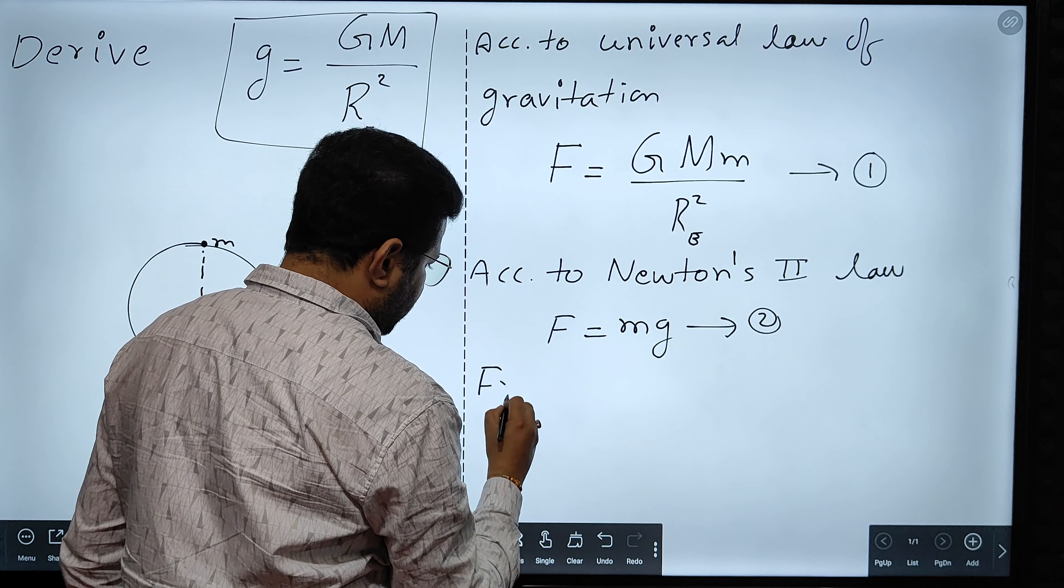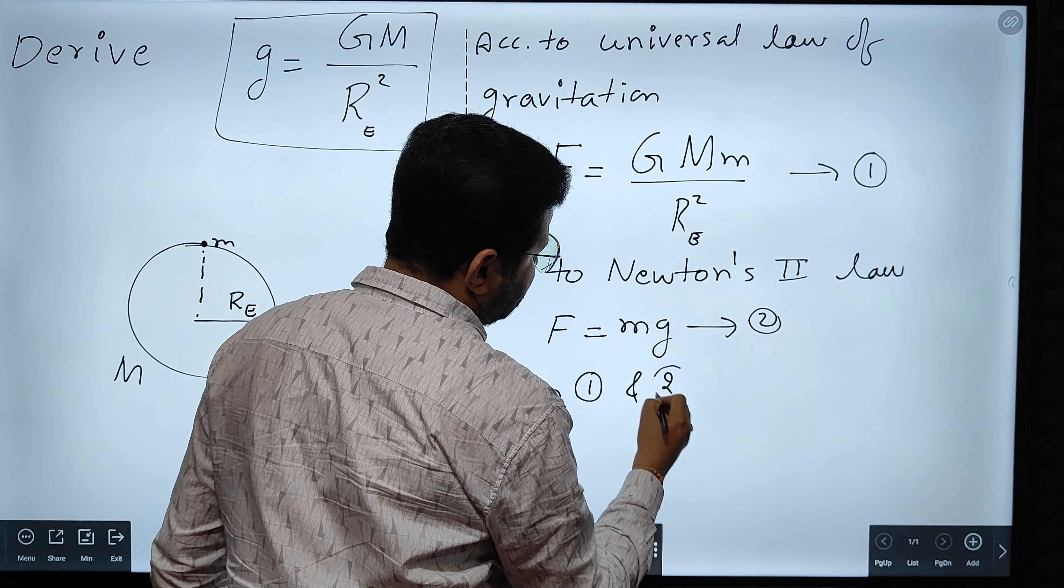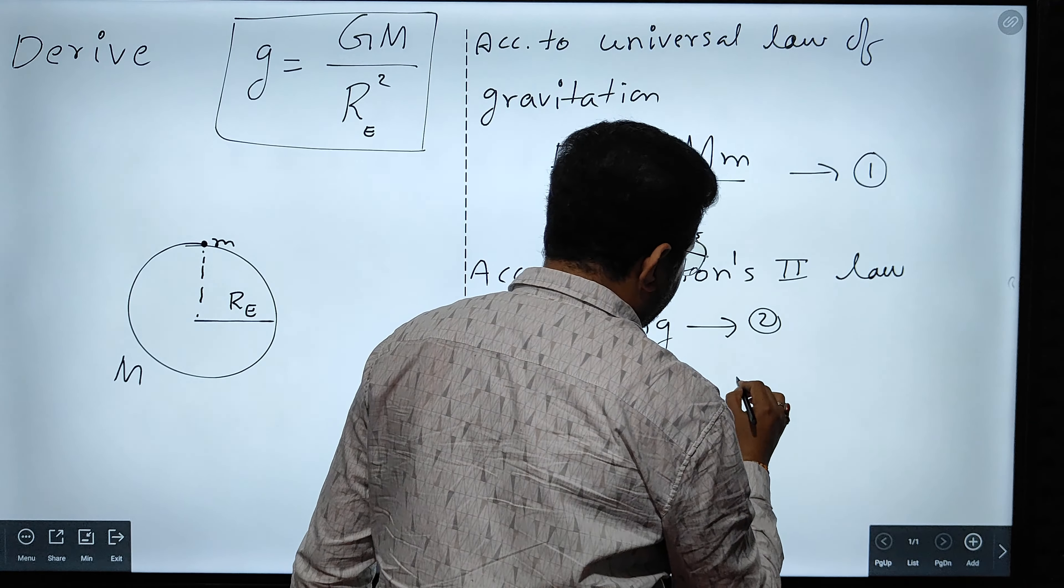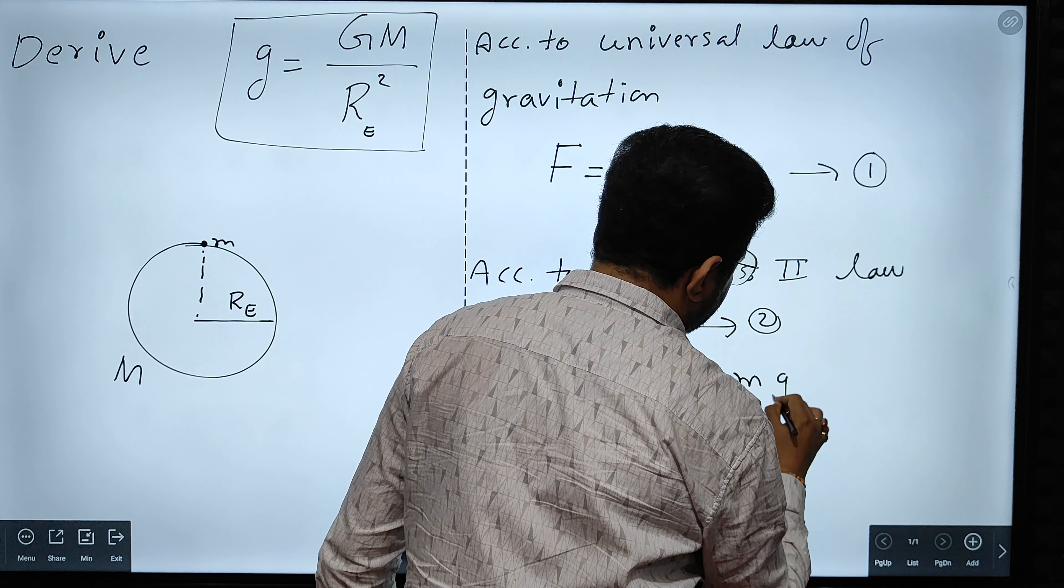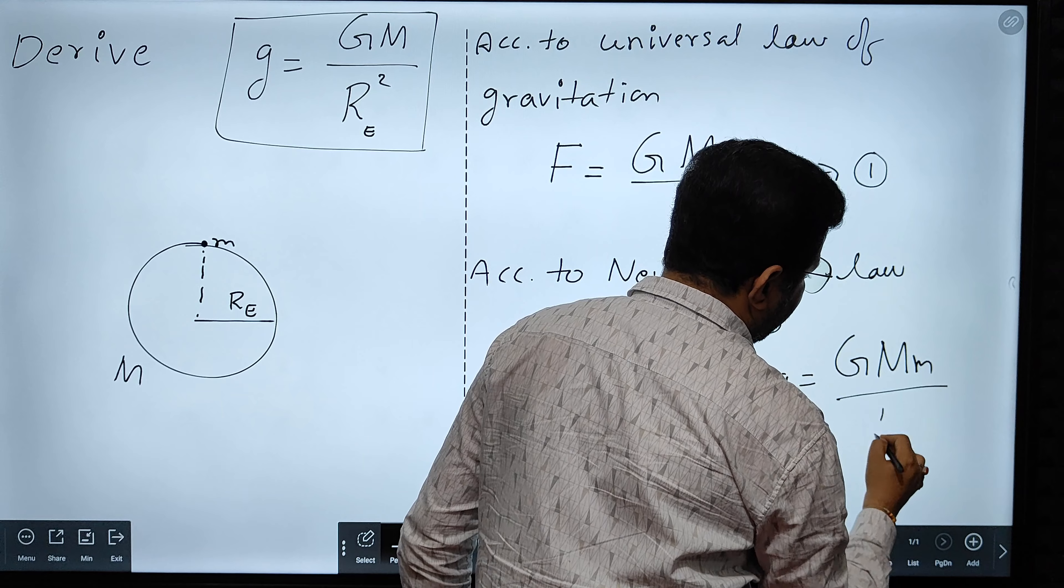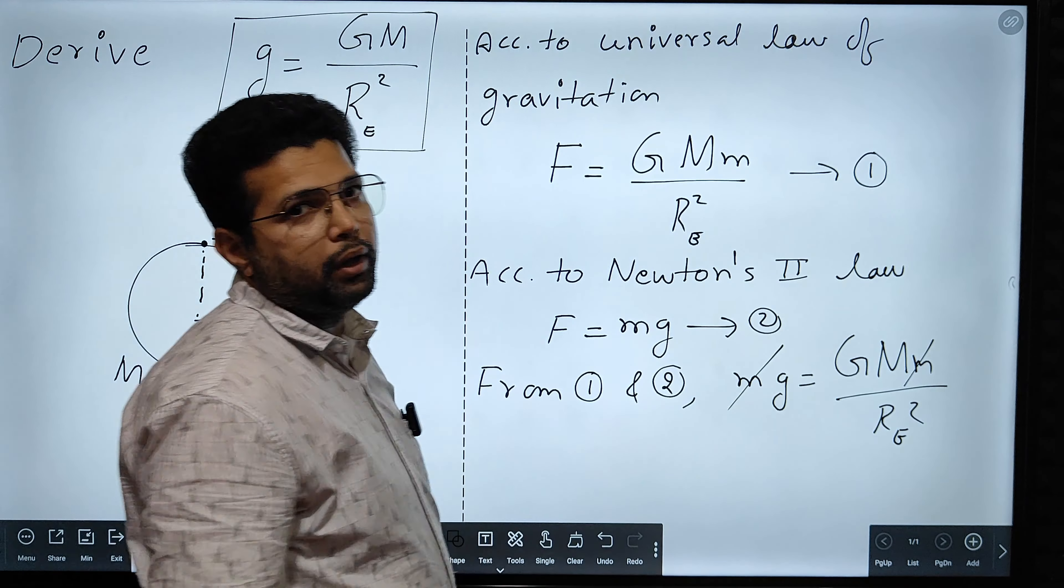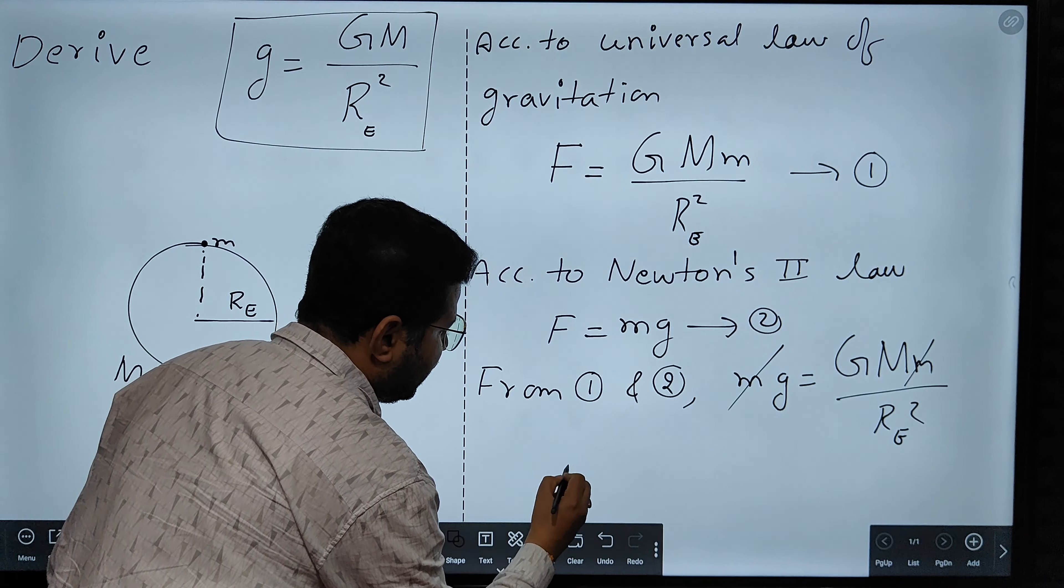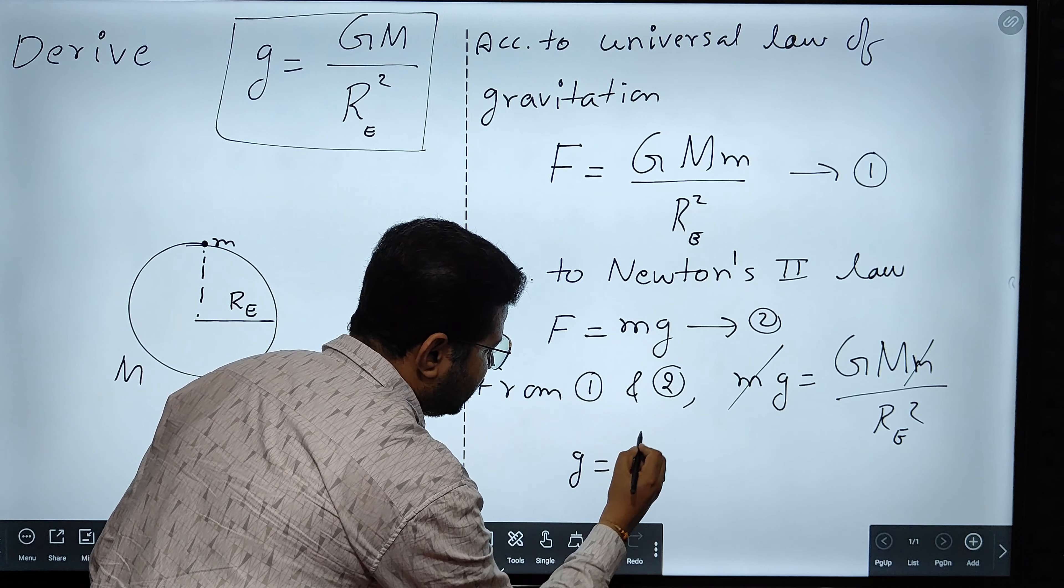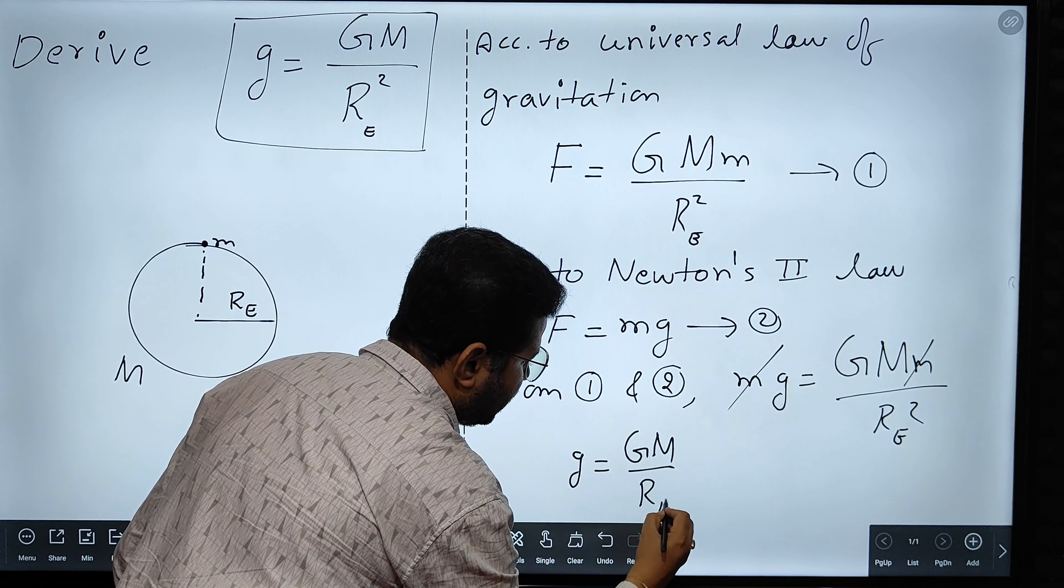Now, from one and two, since the LHS is the same, what we can write? We can write mg is equal to GMm divided by Re squared. Now what happens? This small letter m gets cancelled. So finally, we get an equation for g: g is equal to GM divided by Re squared.